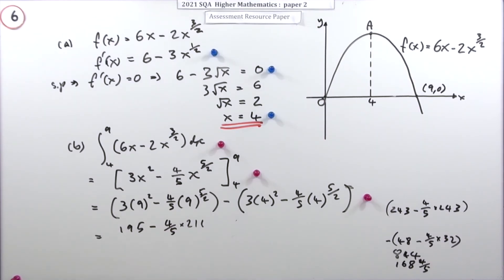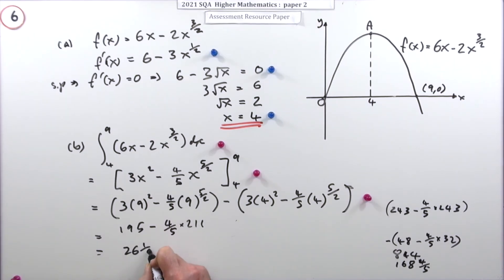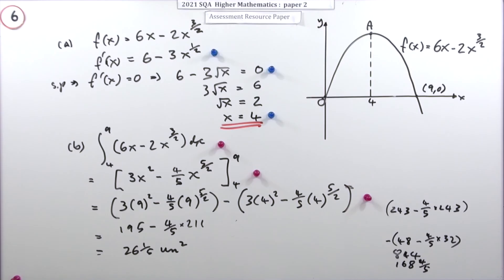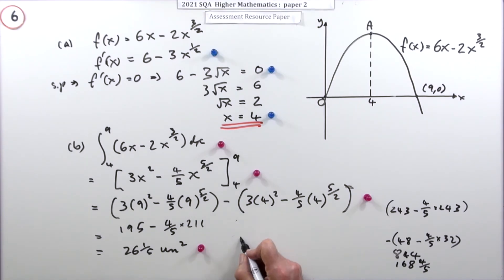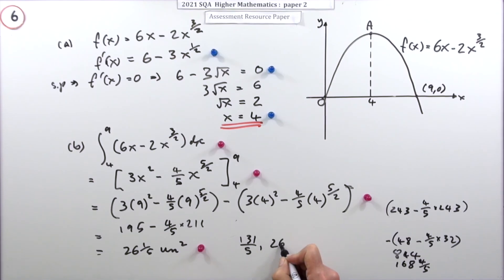Taking that away gives 26 and 1/5 units squared — that's the last mark. You can also write it as the decimal 26.2, or as the improper fraction 131/5. But in practice, you'd just press the buttons on your calculator.